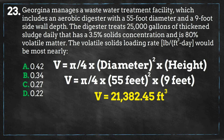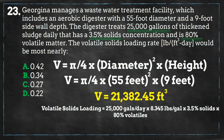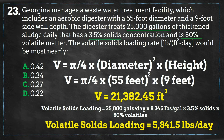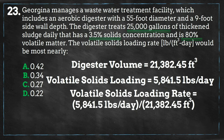Now let's solve for the volumetric flow rate of volatile solids. We are getting a flow of 25,000 gallons of sludge daily, and this sludge has a solids concentration of 3.5% and a volatile matter concentration of 80%. We can use the density conversion of 8.345 pounds per gallon of water and multiply all these values together to get 5,841 pounds of volatile solids per day. Dividing the total solids per day rate by the volume of the digester, we get 0.27 pounds per cubic foot per day of volatile solids, which is answer C.